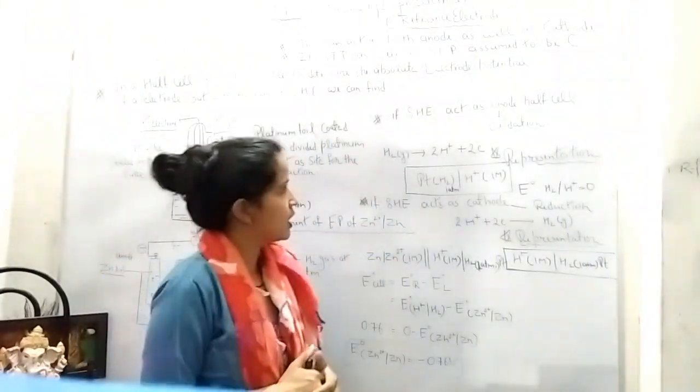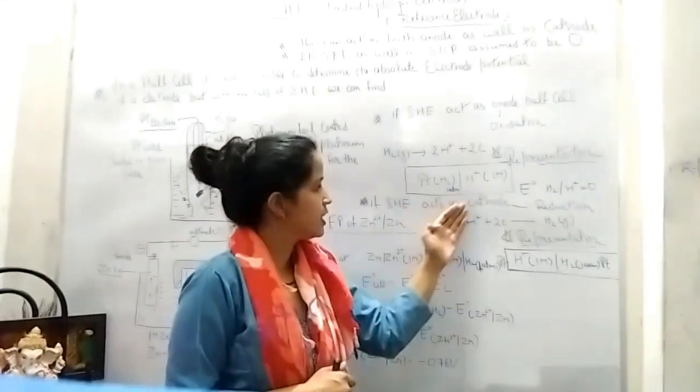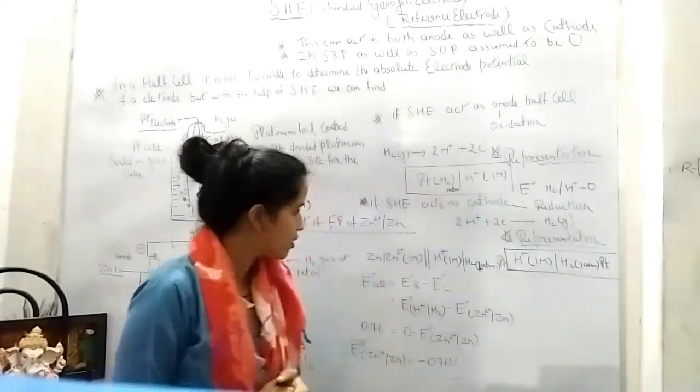And the representation of cell: H+ of molarity 1M slash H₂ gas on platinum at 1 atm. This is the representation when SHE acts as anode and when it acts as cathode.